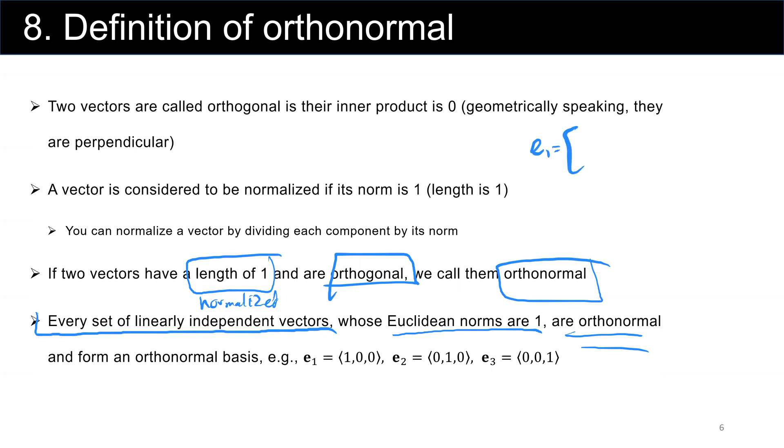An example: E sub 1 is [1, 0, 0], E sub 2 is [0, 1, 0], E sub 3 is [0, 0, 1]. These vectors are orthonormal and they form an orthonormal basis for the three-dimensional space. This is applicable for higher dimensions as well.